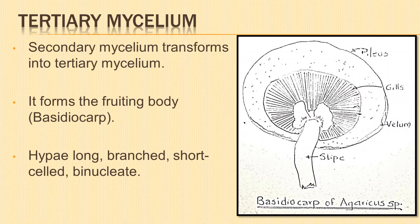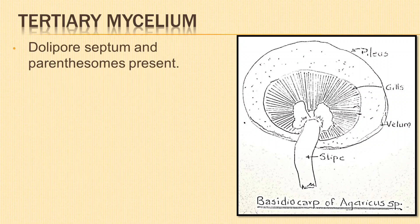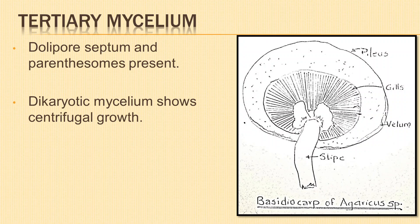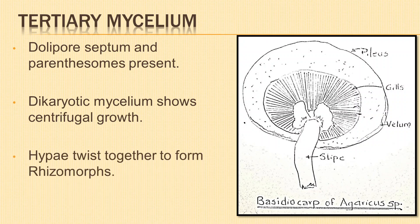The tertiary mycelium gets organized to form the fruiting body or basidiocarp. The hyphae are long, branched, short-celled, and binucleate. They communicate with one another by means of a central pore in the septum. The opening of the dolipore septum is guarded on both sides by parenthesomes or septal pore caps. The dikaryotic mycelium shows centrifugal growth — the hyphae grow in all directions from a central point, forming a circular colony. The hyphae twist together to form thick white hyphal cords called rhizomorphs, which bear the fruiting bodies.